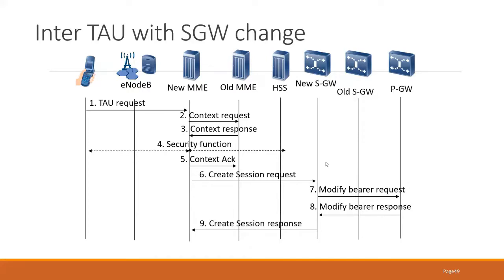Since the PGW is the same, the SGW will send a modify bearer request to the PGW. The existing bearer established with the old SGW needs to be updated — the new SGW IP address and the new MME IP address. The PGW will update that information and send a modified bearer response, informing that the information has been updated. Then the SGW will send the create session response to the MME, informing that the new session has been established between the MME and SGW, and that the PGW has been updated as well.